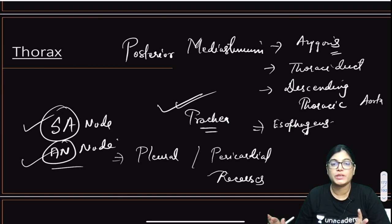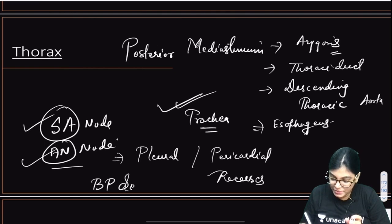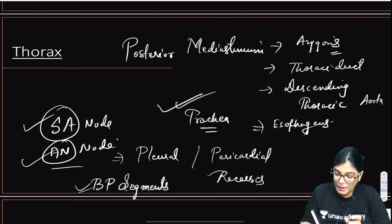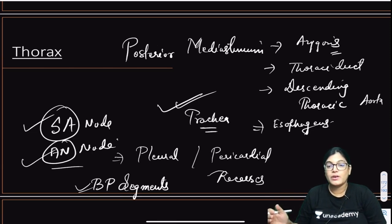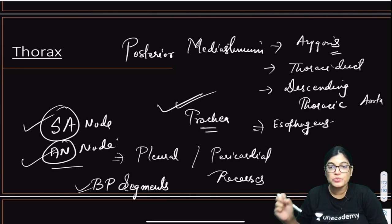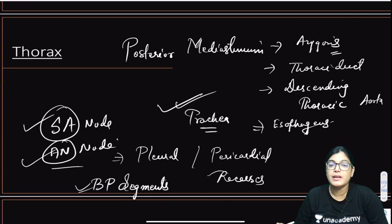I also want to mention bronchopulmonary segments — an important topic. You must know the number of bronchopulmonary segments: sometimes fused on the left side giving eight segments, but always ten on the right side. These are important points to emphasize.